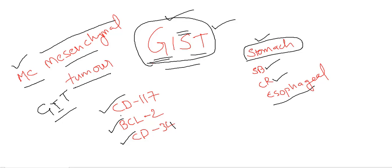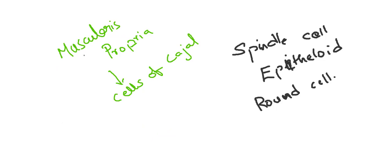These are associated most commonly with CD117, BCL2, and CD34. Among these, CD117 is most commonly associated with GIST.